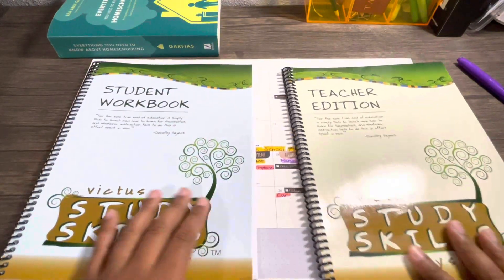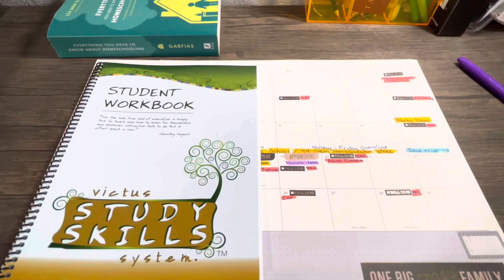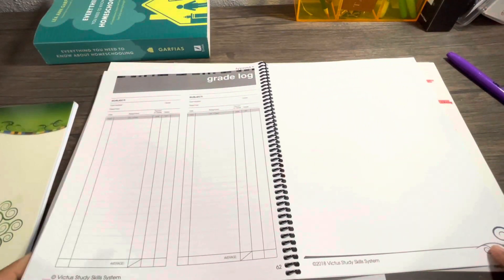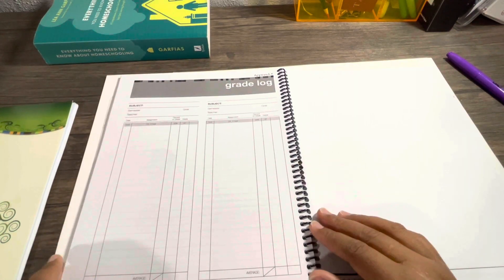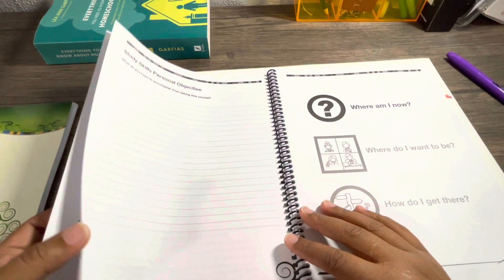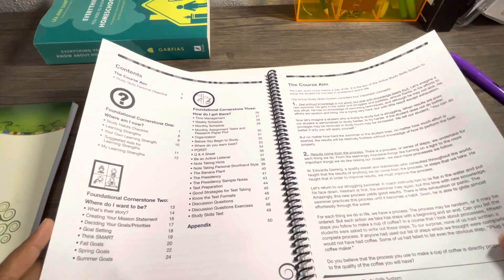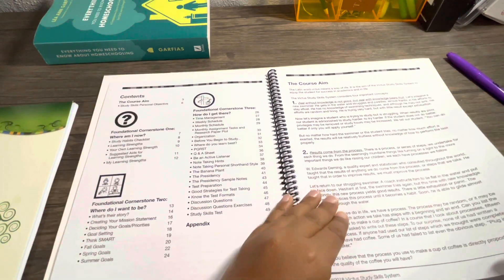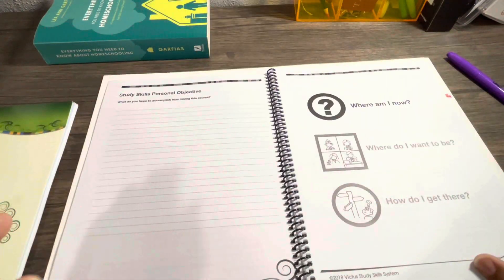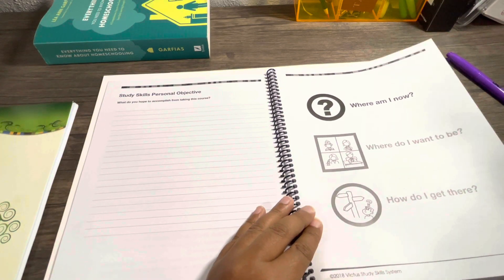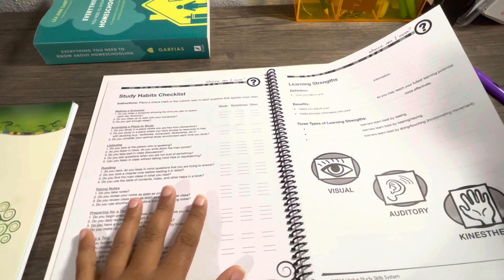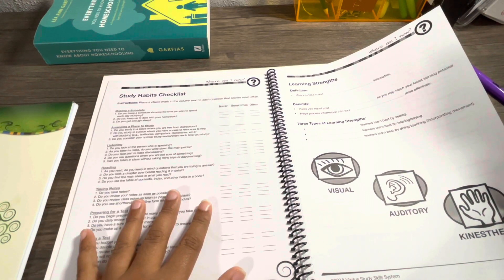Let's get into the lessons. Let's look into the student edition. It goes over with them what is the aim of the course, the objectives, and the three questions that they are going to answer along the way to figure out how they will do their best work.